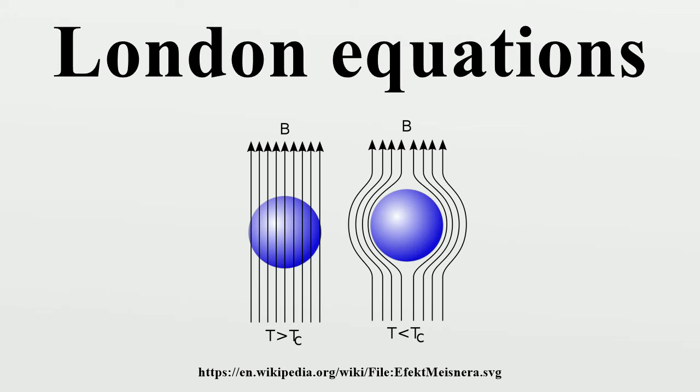This is precisely what the first London equation states. To obtain the second equation, take the curl of the first London equation and apply Faraday's law to obtain as it currently stands. This equation permits both constant and exponentially decaying solutions.